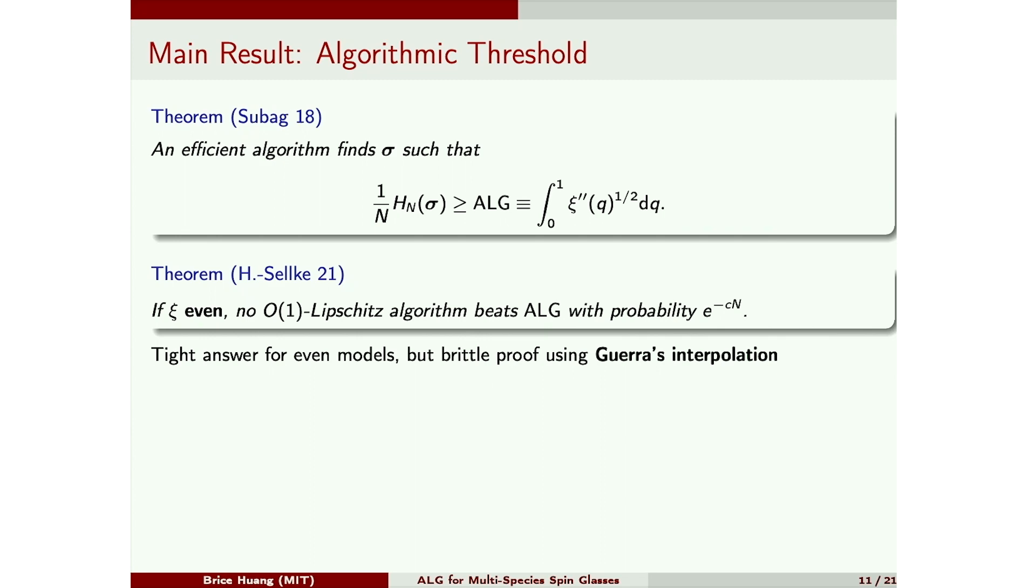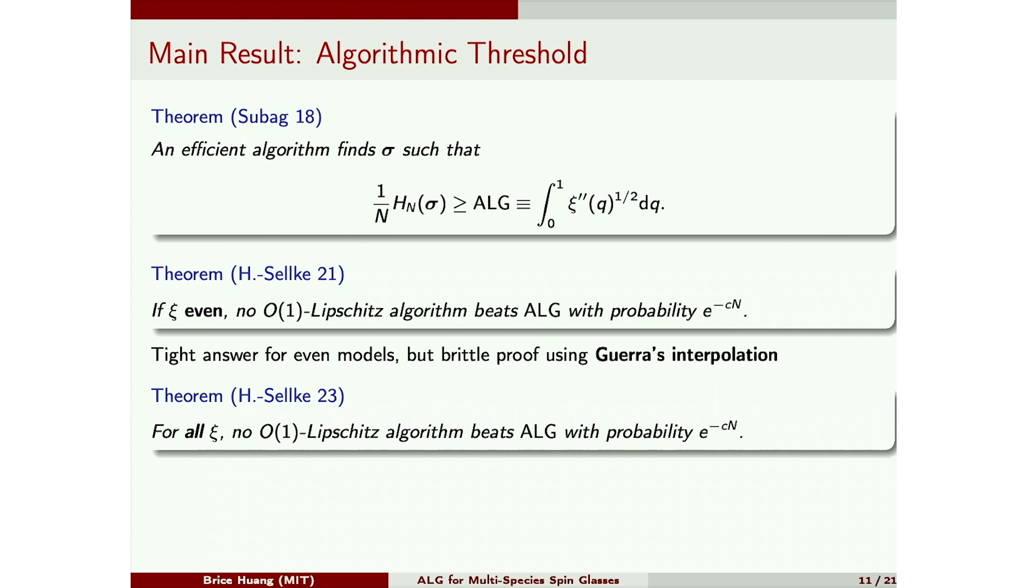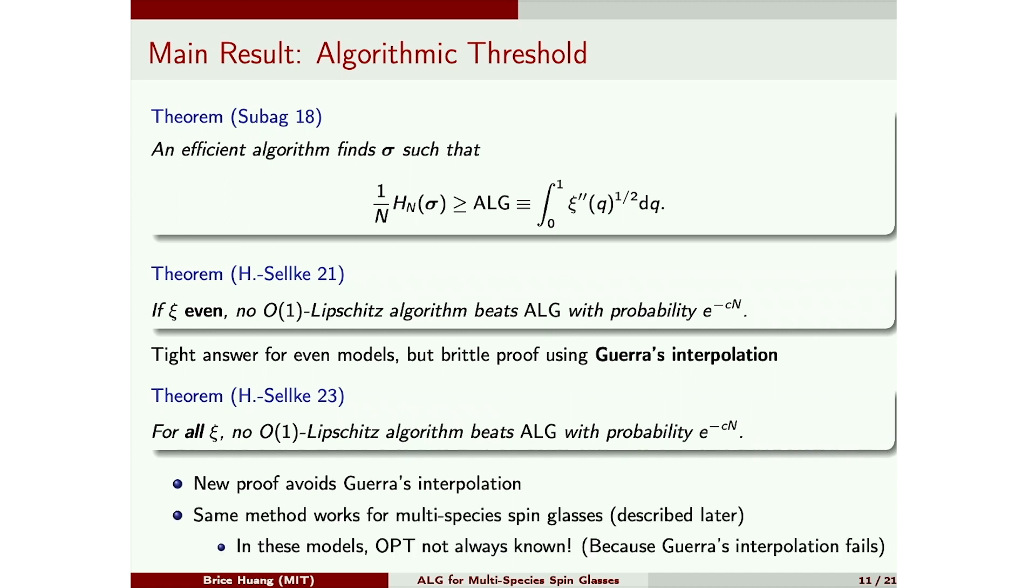But in recent work, we were able to remove this even assumption and show that this value, alg, is the computational threshold for all Lipschitz algorithms. And the key tool here is a new proof of the branching OGP, which does not use Guerra's interpolation. This proof is both simpler and more robust, and works just as well in the more general model of multispecies spin glasses. In fact, in these multispecies models, the value opt is not always known, for the same reason that Guerra's interpolation fails. So this is the first model where the value alg is known before the value opt.